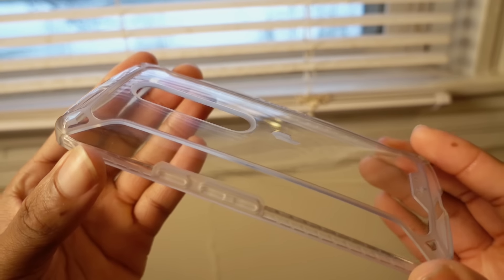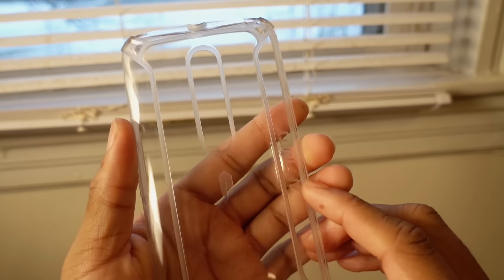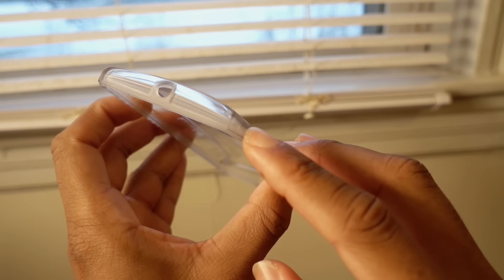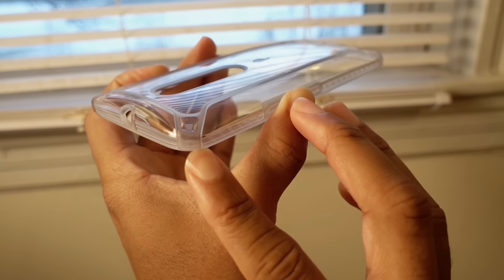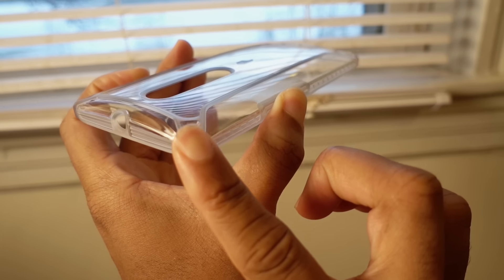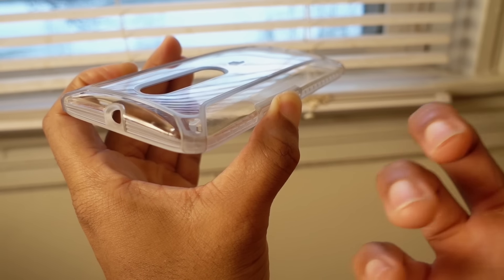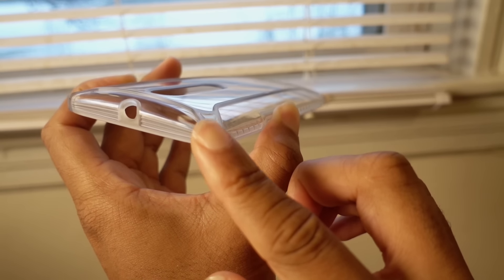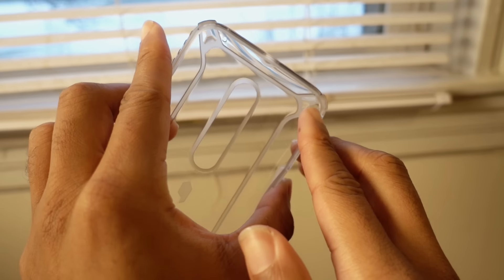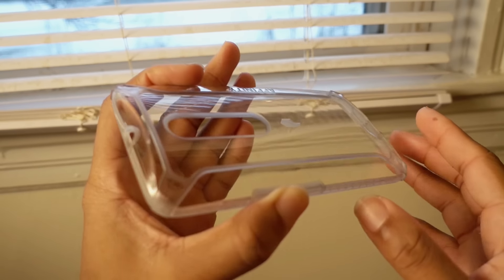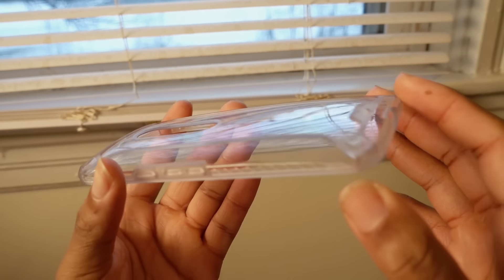And if you look over here in the corners, the raised part goes all the way over here. So if it does fall on the edges, which is a sore point for a lot of phones—dropping it on the edge can cause the screen to crack—you have added protection here as well on the inside and on the outside. So this case is going to provide a lot of protection. You have access to all your ports.